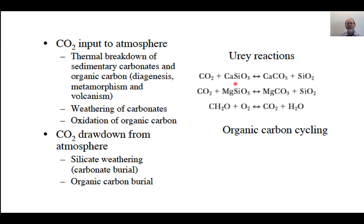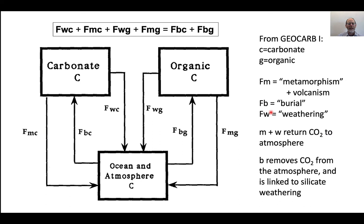There are simplified reactions here. The weathering of calcium silicates and magnesium silicates generically ultimately produces calcium carbonate plus silica, and the calcium carbonate gets buried. There's also a reaction where organic carbon gets oxidized by organisms to produce CO2, putting CO2 back into the atmosphere. Very schematically, this is how the models are put together. There's a carbonate carbon reservoir, an organic carbon reservoir, and an ocean and atmospheric carbon reservoir with fluxes among all of these. There's a flux from M — metamorphism and volcanism — representing the thermal release of CO2 from breakdown of carbonates.